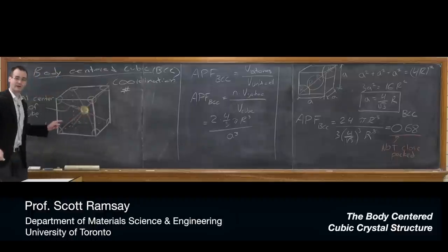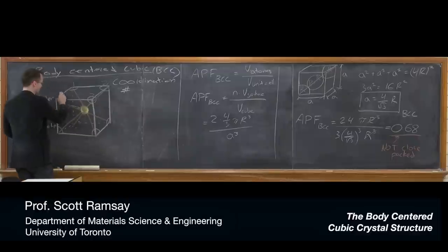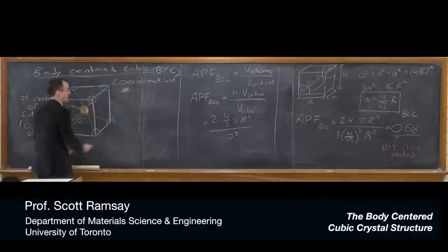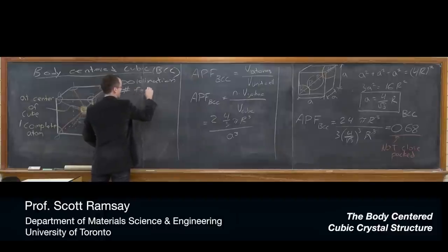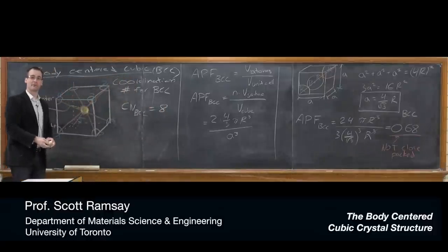You can see with these red lines I've drawn the direction of contact—this atom in the center is touching one, two, three, four corners up at the top, and then four corners, five, six, seven, and eight at the bottom. So the coordination number for BCC is eight. Excellent. Thank you very much.